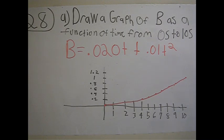You just use this function for B, which they gave you in the problem, where B equals 0.02t plus 0.01t squared, and plug it into your graphing calculator or plug in the values by hand. You'll get this nice little graph right here.